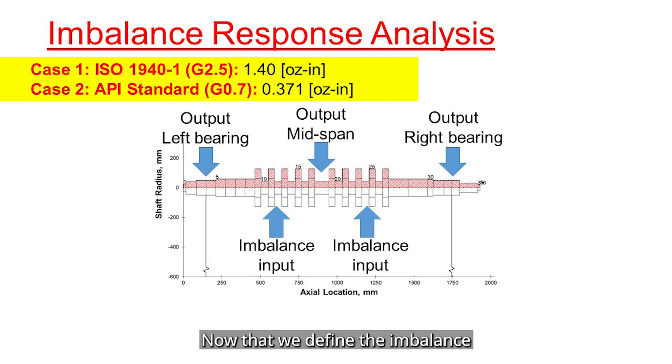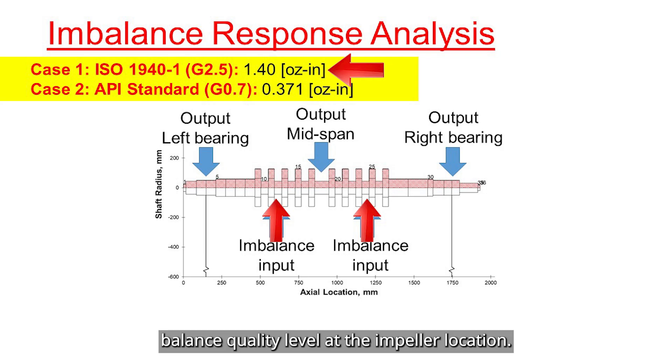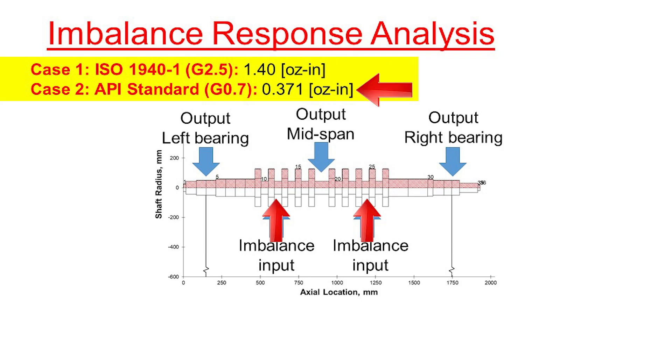Now that we defined the imbalance, let's set the observation points for rotor motion. In this case, we will set at both bearings and at the middle of the shaft. For imbalance response analysis, we are applying the imbalance at two separate planes, both located at the impeller positions. In the first case, we will use a G2.5 balance quality level at the impeller location. In the second case, we will tighten that tolerance to G0.7, which is the API specification limit.